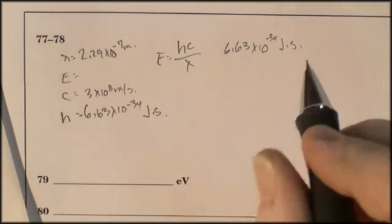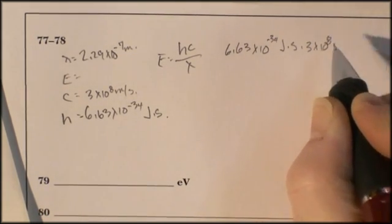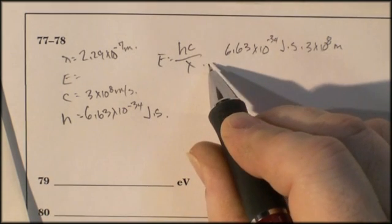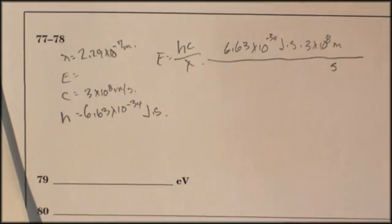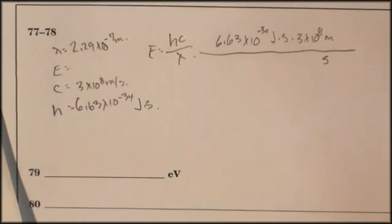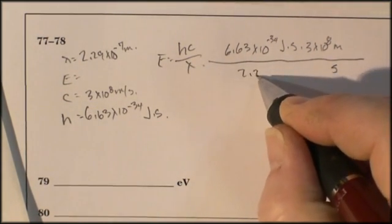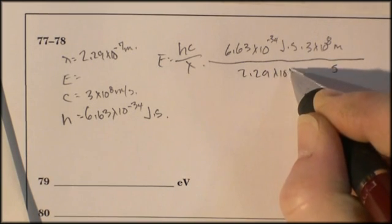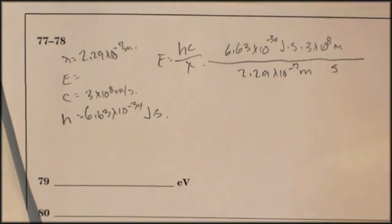I'm going to multiply that by 3 times 10 to the 8 meters per second. And then I'm going to divide that by wavelength, which is going to be 2.29 times 10 to the negative 7 meters.